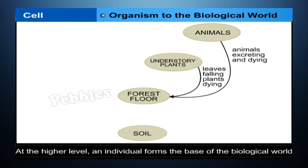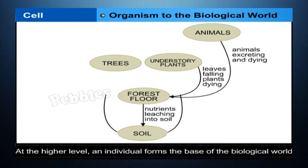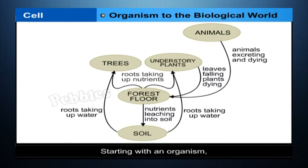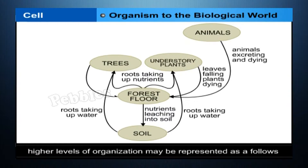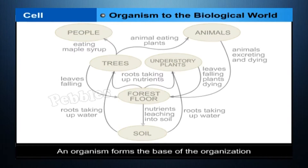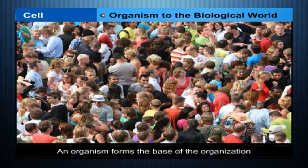At the higher level, an individual forms the base of the biological world. Since an individual may be made up of one or millions of cells, a cell is called the fundamental unit of life. Starting with an organism, higher levels of organization may be represented as follows. An organism forms the base of the organization — for example, a human being.